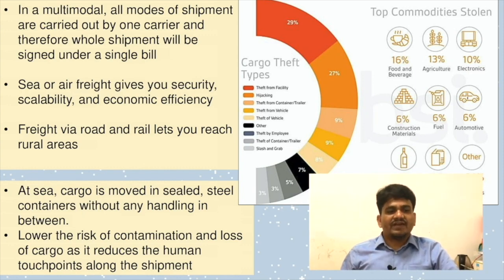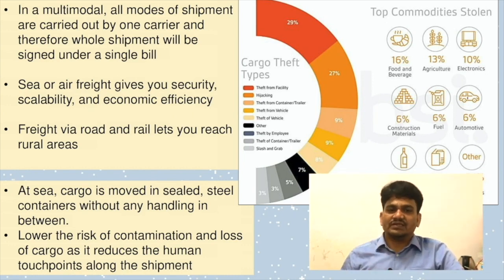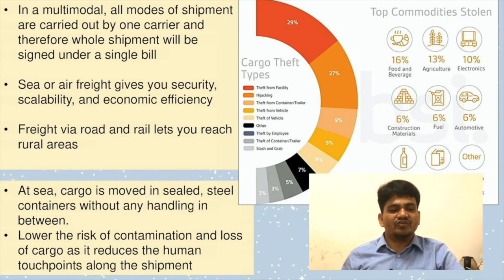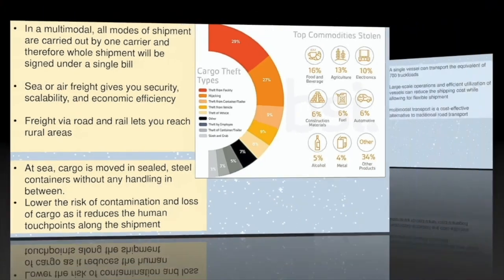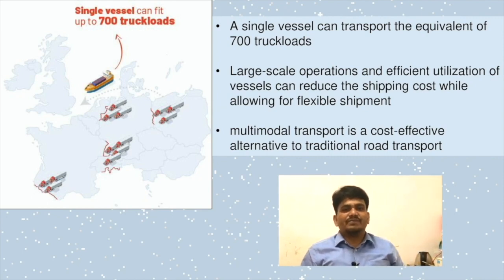Sea or air freight gives you security, scalability, and economic efficiency, while freight via road and rail lets you reach rural areas. In terms of cargo theft types — theft from the facility, hijacking, and theft from the container or vehicle — the percentages decrease from 29 percent down to 27 percent and 9 percent. At sea, cargo moves in sealed steel containers without handling in between, lowering the risk of contamination and loss of cargo by reducing human touch points. A single vessel can transport the equivalent of 700 truckloads, and larger-scale operations with efficient vessel utilization can reduce shipping costs. Multimodal transport is the most effective alternative to the traditional road transport system.